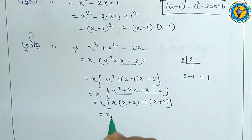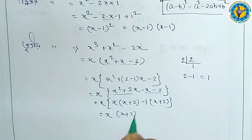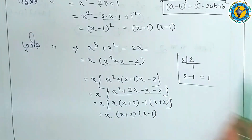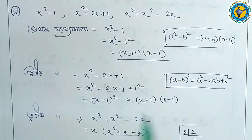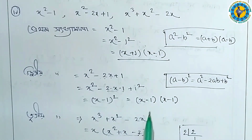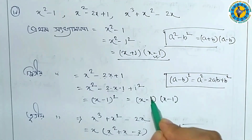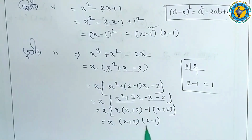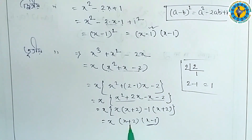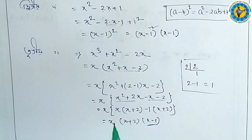This is equal to x into — the second thing is x plus 2 is common. x plus 2 is common and x minus 1 is also identified. Third thing: x plus 1 is common, then x minus 1 is common, then minus 1 is common. Third case: x minus 1 is common, and here x is common.